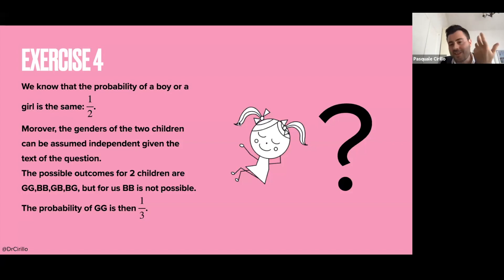But if I tell you that one of my kids is a girl, obviously, I can immediately exclude BB. So the double B, because if I tell you that one is a girl, I cannot have two boys. The total number of children I have is two, and one is a girl. So the remaining possibilities are double G, so GG, GB, so girl and boy, and boy and girl.